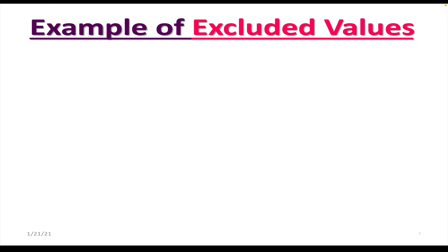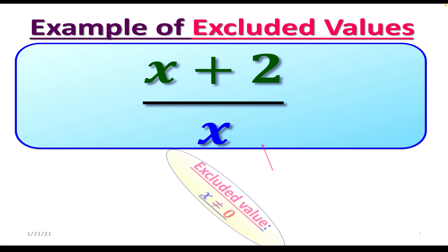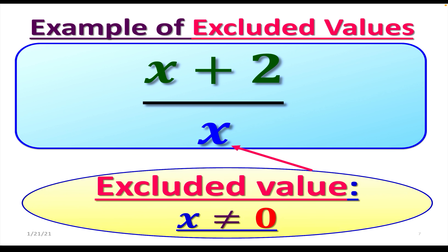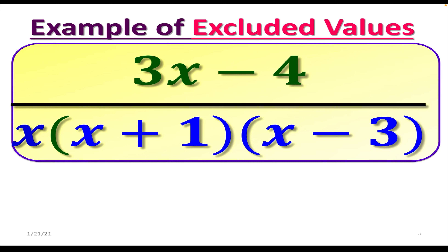Let's look at an example. Say we need to find excluded values of (x + 2) over x. All you want to do is grab the x from the denominator and set it not equal to zero. This value x = 0 has to be thrown out from the domain of this function — it has to be excluded — since zero makes this fraction undefined and creates a division by zero problem.